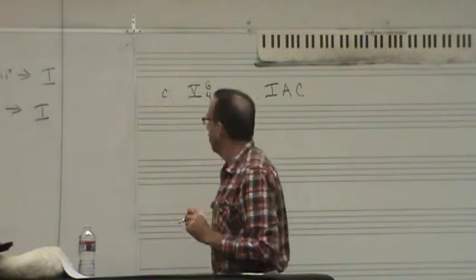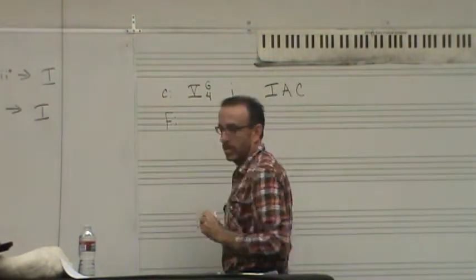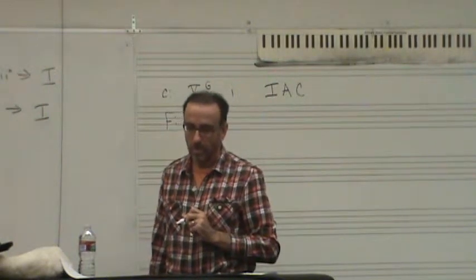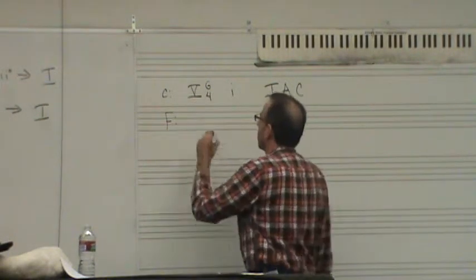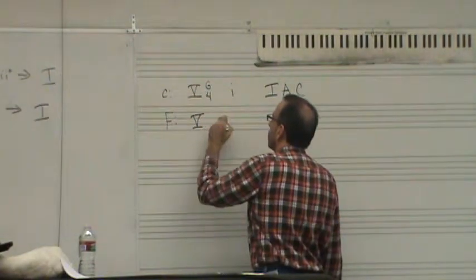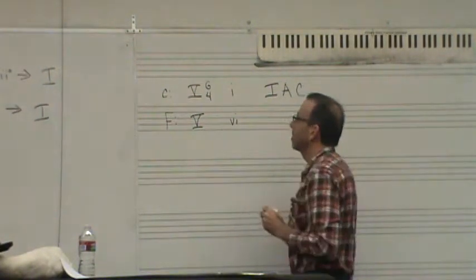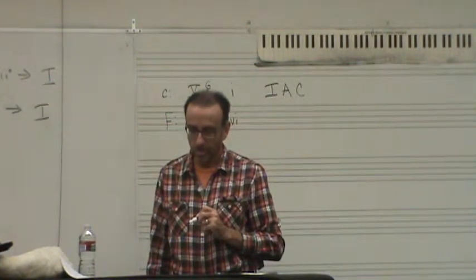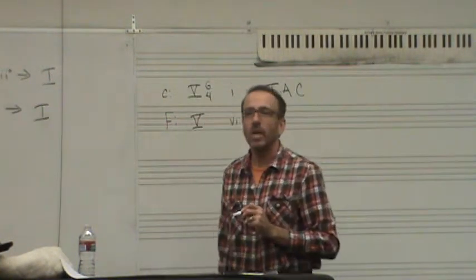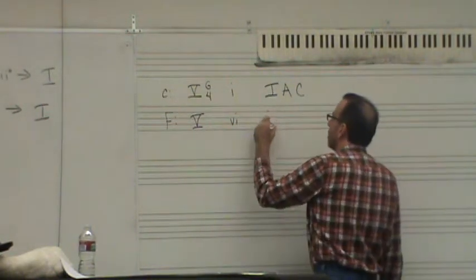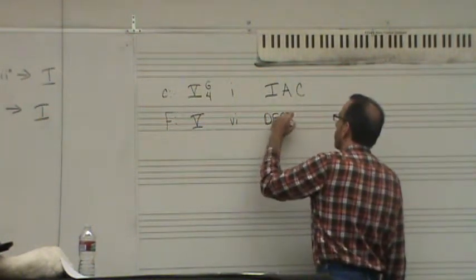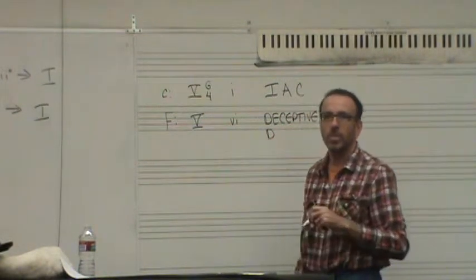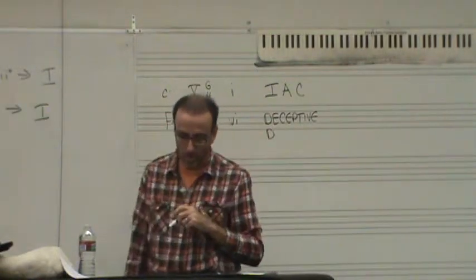Okay, what about number 2? We're in the key of F. And what's our chord progression there? 5 to 6, yeah. Do we have a double third there? Yes. So what kind of a cadence would that be? Deceptive, yeah. Actually, I think for this I just wanted people to write D, for deceptive. That's fine.